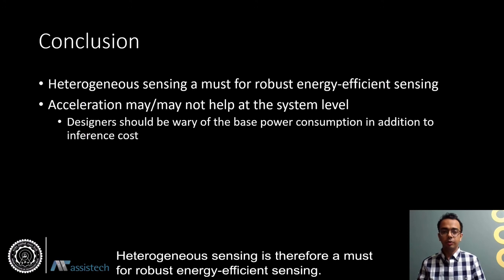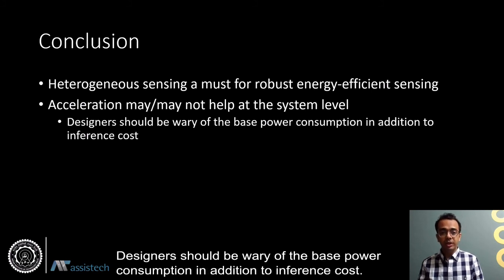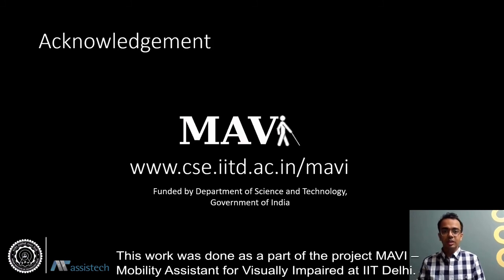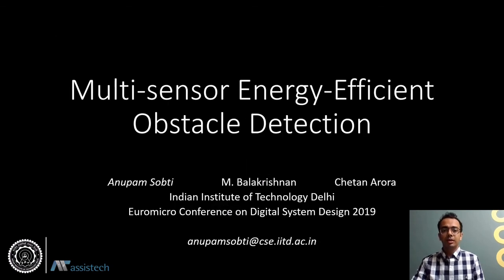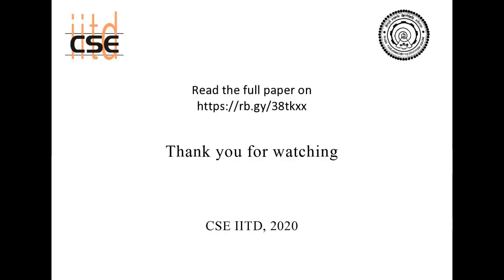Heterogeneous sensing is therefore a must for robust energy efficient sensing. Acceleration may or may not help at the system level, so designers should be wary of the base power consumption in addition to the inference cost. This work was done as part of the project MAVI — Mobility System for Visually Impaired — at IIT Delhi, and was published at the Euromicro Conference on Real-Time System Design 2019.